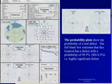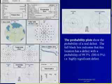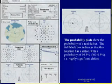Next is the probability plots, which shows the probability of a real defect. The full black box indicates that this location has a defect with a probability of 99.5%, that is to say a highly significant defect.